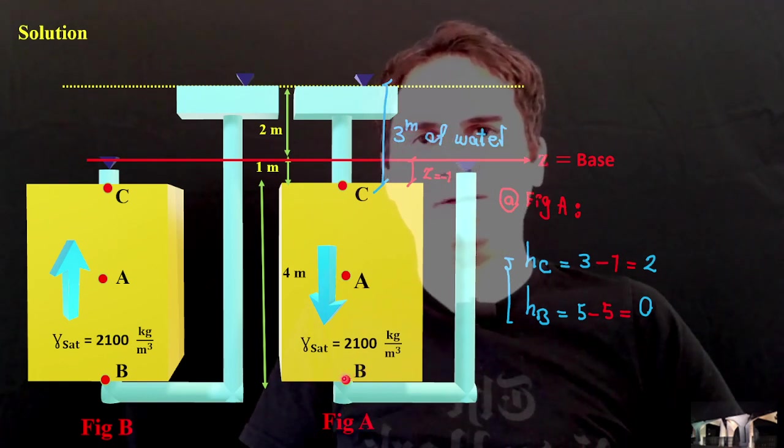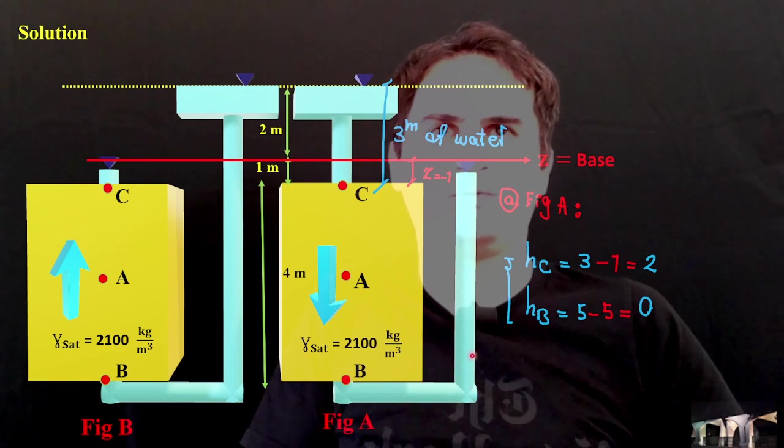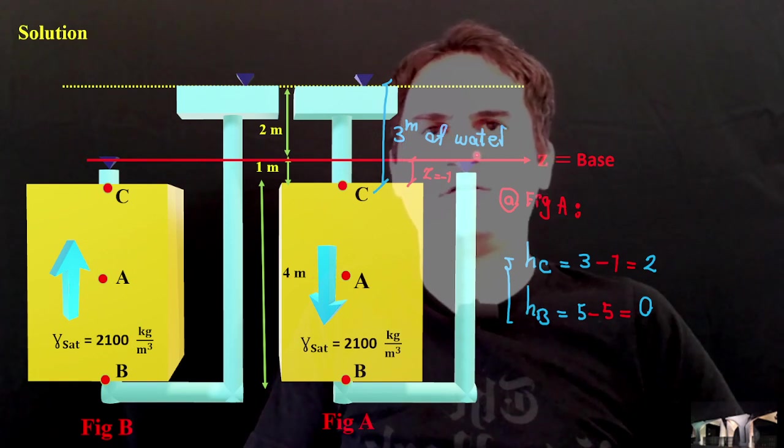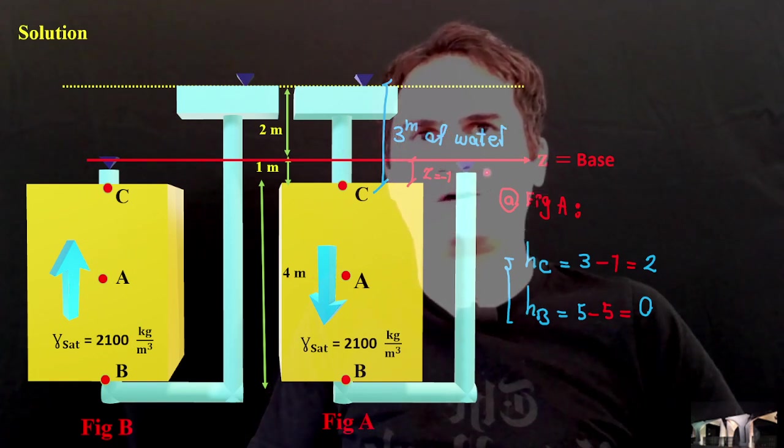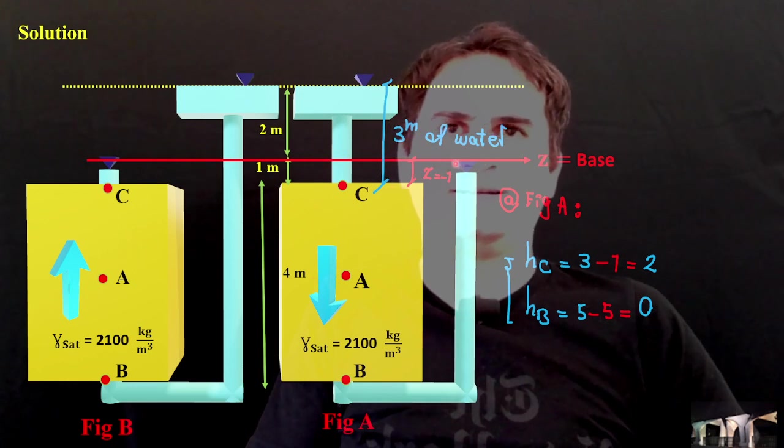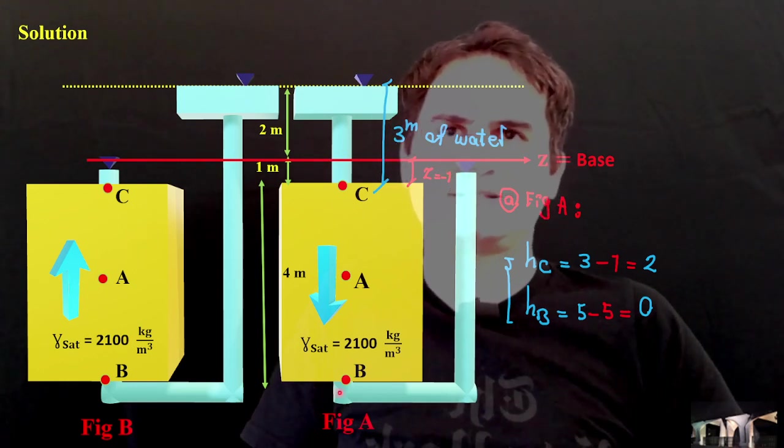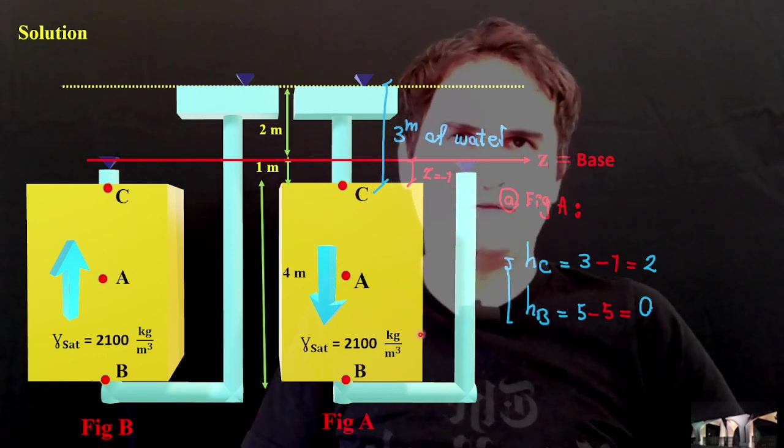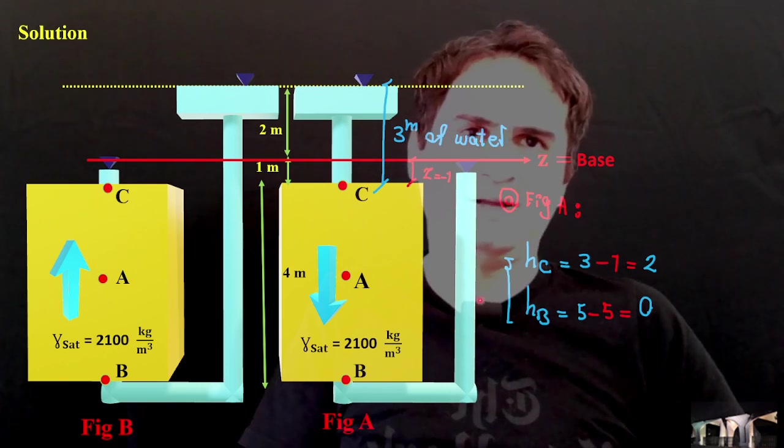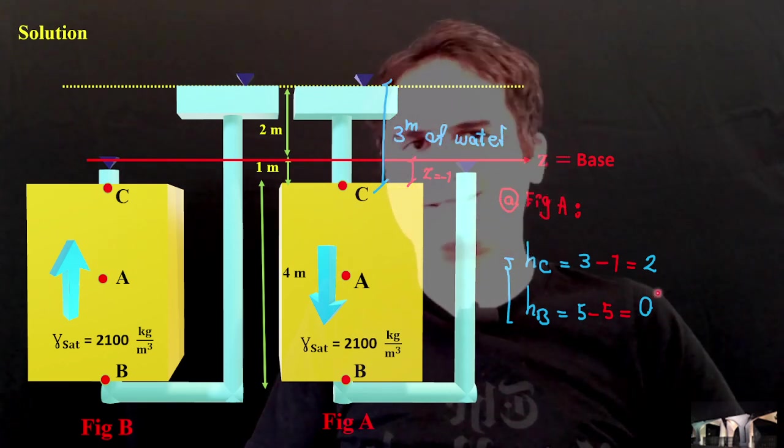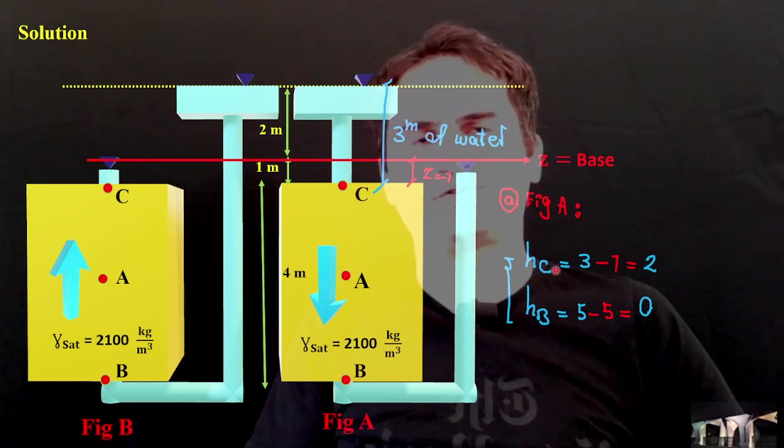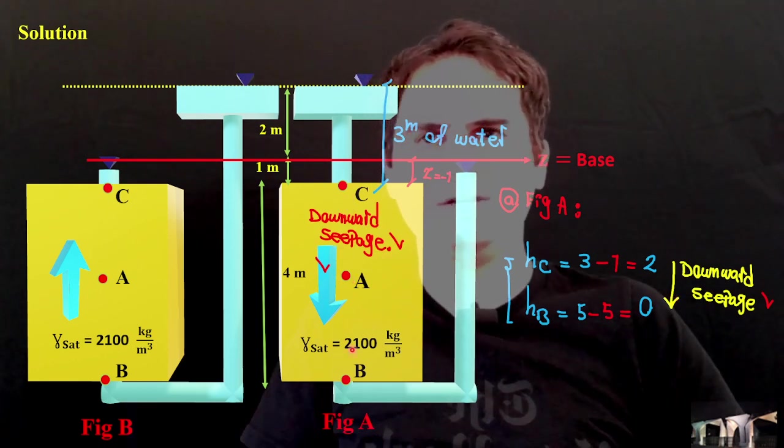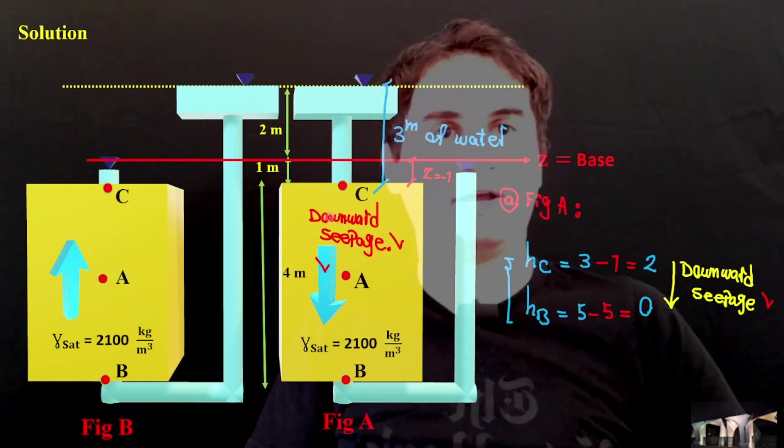And if you just move to the point B, head of water at the top of point B is like 5 meters of water. This is our water and this is the level of water. This is 4 meters plus 1 meter. That's the 5 minus 5, which is a Z from our base. And it just gives us H_B equal to 0. Definitely water travels from higher head to lower head. So that's the downward seepage, as you can see from C to B. Our direction for figure A was correct.